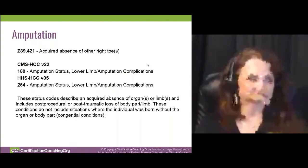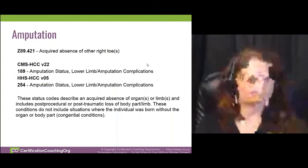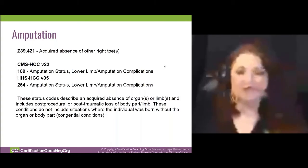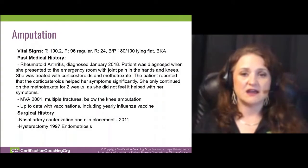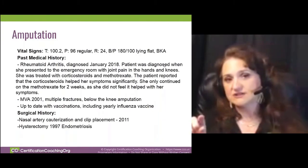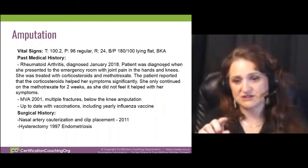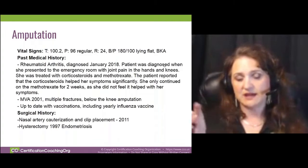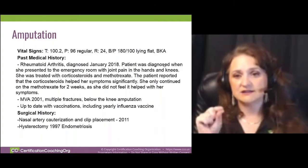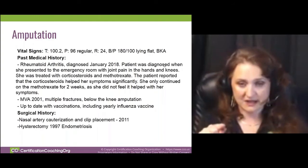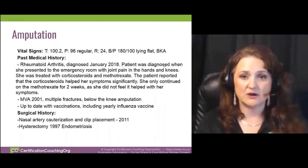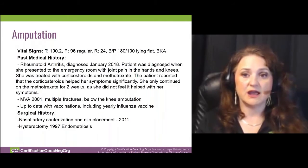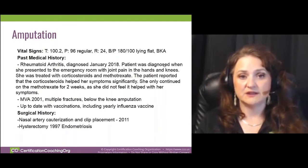Amputations are one of the top five HCCs that are overlooked and missed. Usually if it's a lower extremity, you'll find it where the vital signs are. The nurses or clinician will put information like 'BKA' in the vital signs section. You can use that information as your supporting documentation, even though the clinician documented it — we are able to do that. You'll see BKA or AKA — below the knee amputation or above the knee amputation.